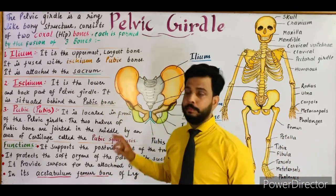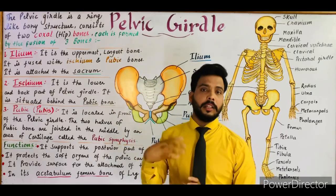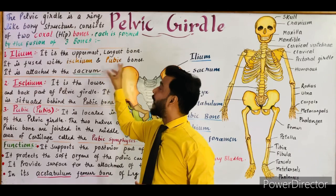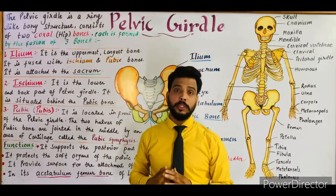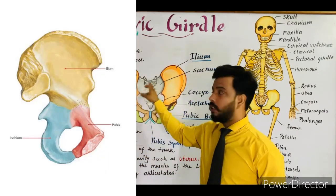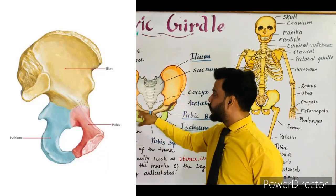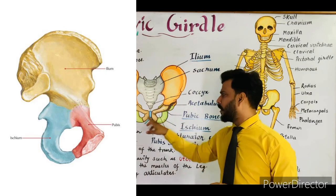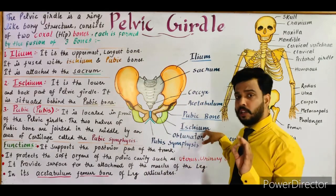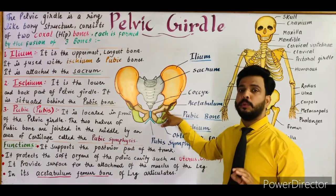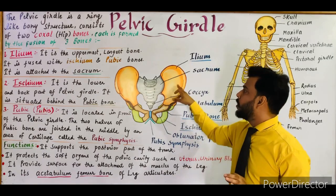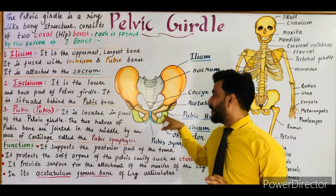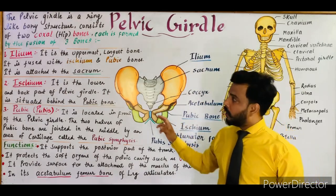The ileum is fused with the ischium and pubis bones — both ileum bones are fused with the pubis as well as the ischium bones. The second bone, the green-colored bone, is the ischium, and the brown-colored bone is the pubis or the pubic bone.